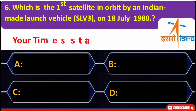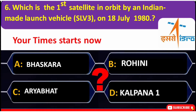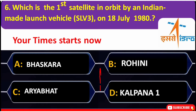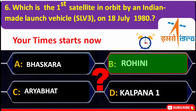Which is the first satellite placed in orbit by the Indian-made launch vehicle SLV-3 on 18th July 1980? A. Bhaskara, B. Rohini, C. Aryabhatta, D. Kalpana 1. Correct answer is B — Rohini.